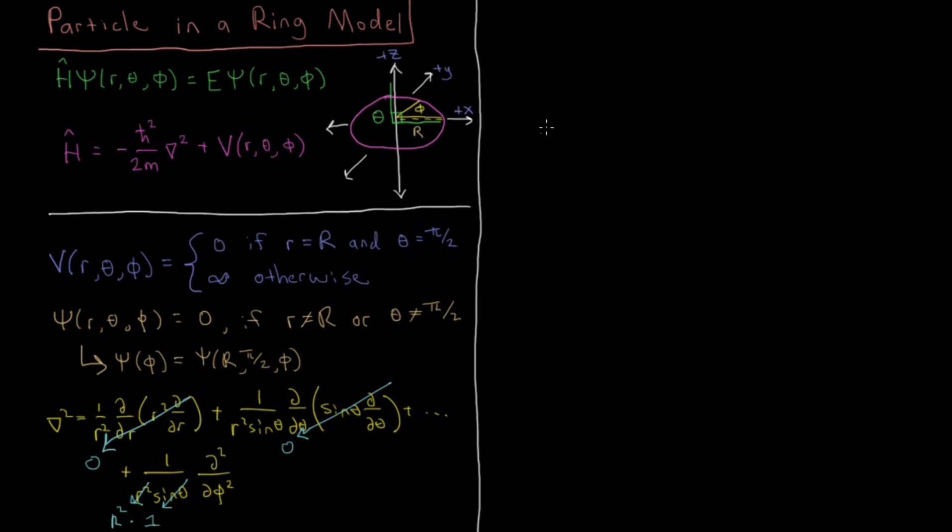So if I rewrite our Hamiltonian here on the next page, we have that H equals this minus h-bar squared over 2m holds over minus h-bar squared over 2m. We pick up a factor of 1 over big R squared from the denominator here. So it's 1 over minus h-bar squared over 2m R squared. And then this second partial derivative becomes an ordinary derivative, d squared, d phi squared. And with respect to our wave function of phi, our potential is zero because we're constraining the radius and the polar angle to be values where the potential is zero. So our potential is zero within this region. So this ends up being our total Hamiltonian.